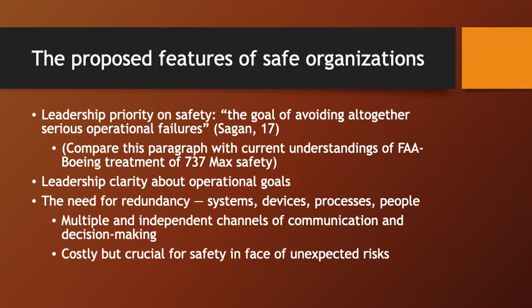There are four or five key features HRO theories have identified. The most commonly cited is that leaders and executives must place an unambiguous priority on the safety goals of the operation - as Sagan puts it, the goal of avoiding altogether serious operational failures. We might contrast this with the actual behavior of FAA and Boeing executive management in the case of the 737 MAX. If cost cutting and safety management are parallel goals, leaders need to be clear that safety trumps cost cutting.